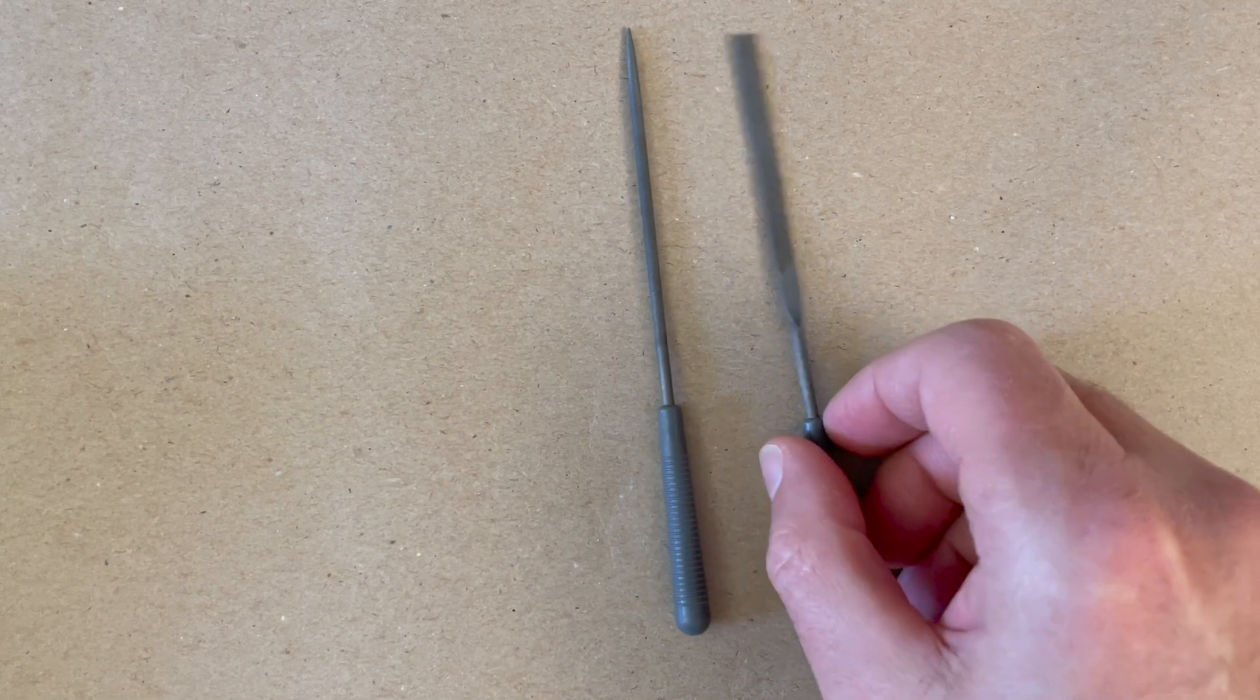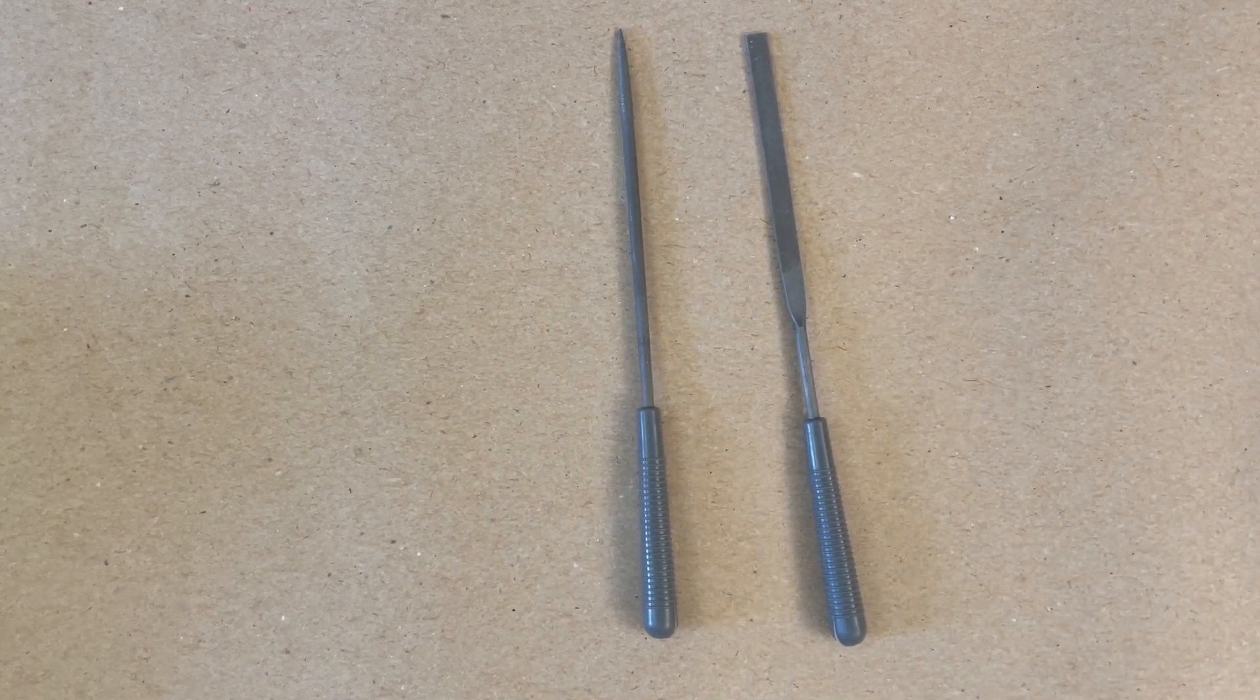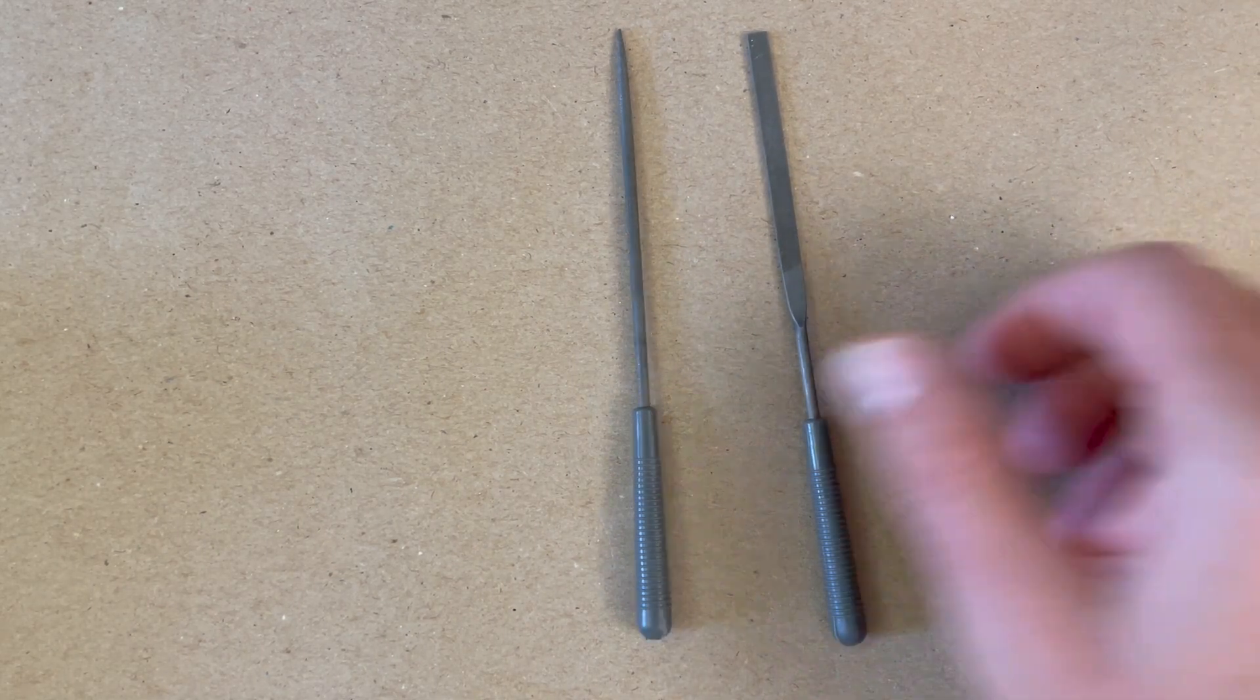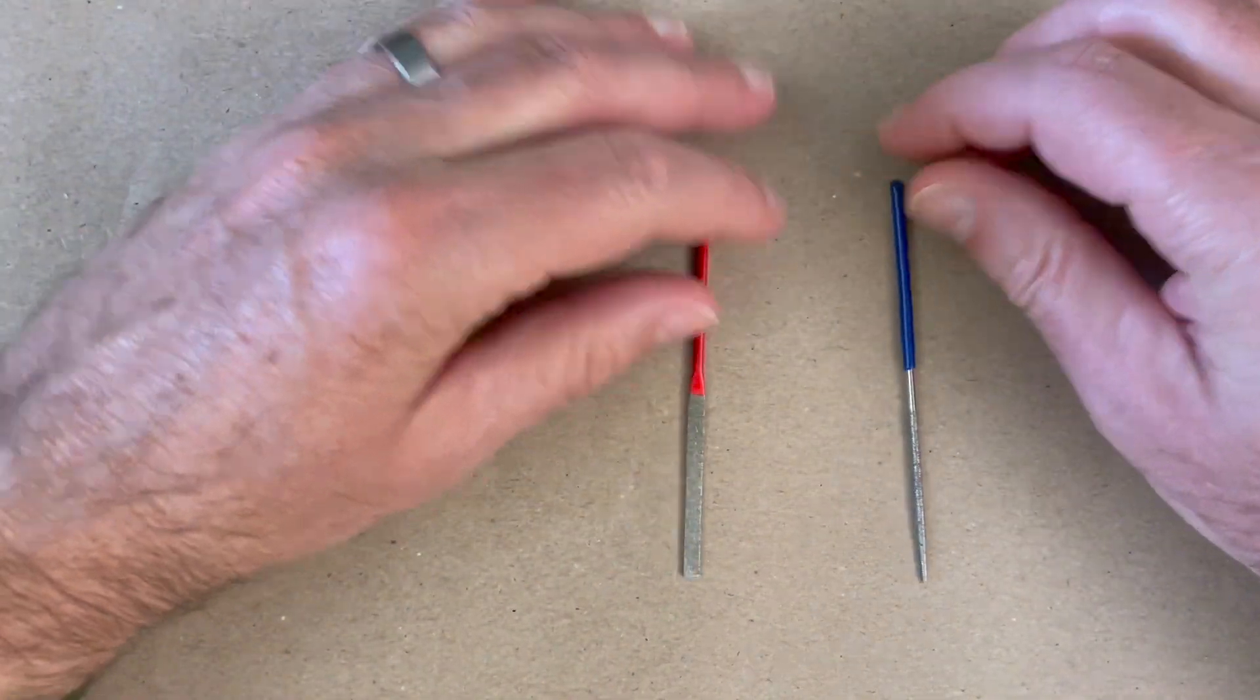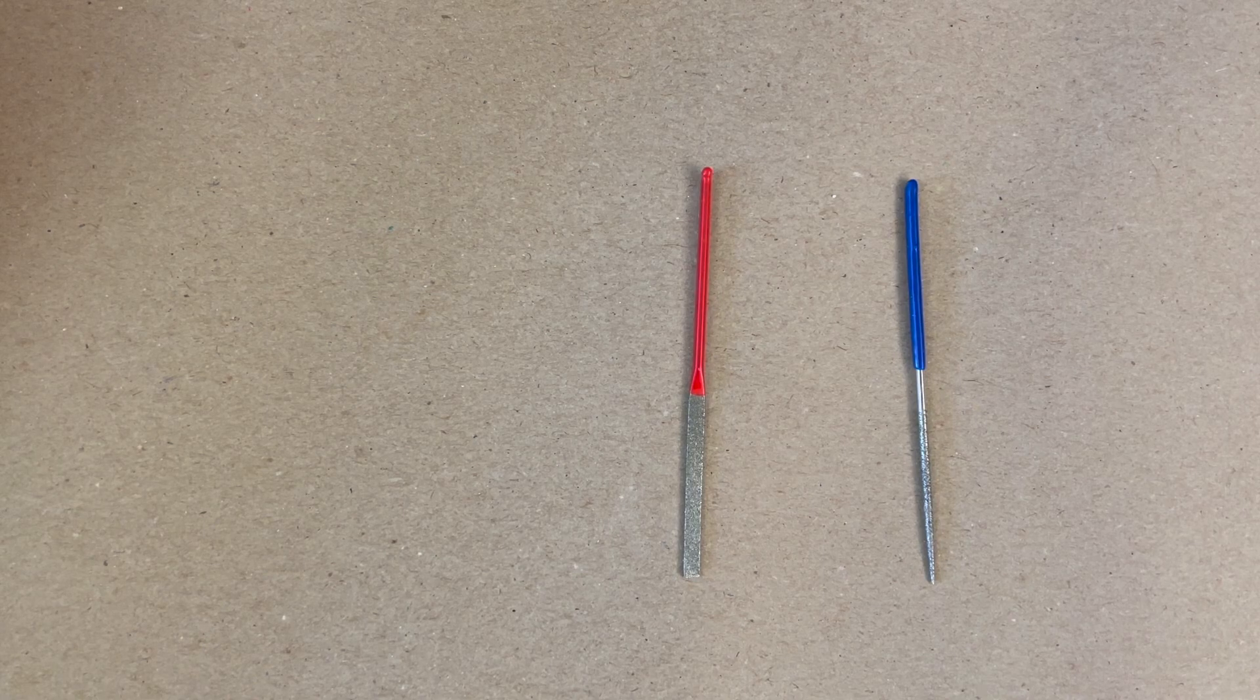My second tool are these small files. I tend to use these small files to clean out the area where the hinges go. These are the files I use most of the time. I have another set of files that I use for the child size, a little bit smaller. They tend to be sold as jeweler files.